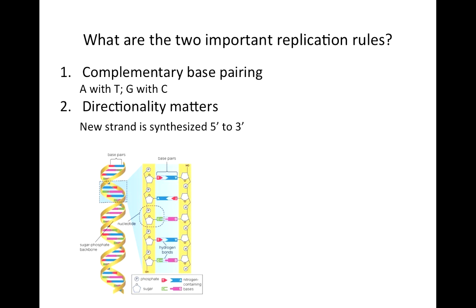This diagram illustrates a piece of double-stranded DNA. Let's label the ends of the molecule, remembering that the end with the phosphate group is the 5' end and the end with the OH group is the 3' end. On the left strand, the top is the 5' end and the bottom is the 3' end. On the right strand, the top is the 3' end and the bottom is the 5' end.